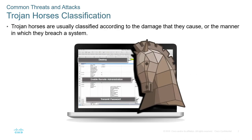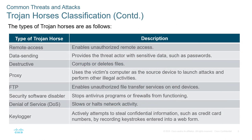Trojan horses can be extremely persistent and extremely painful. Normally they are classified according to the damage they cause or how they gain access to the system. For example, we have a remote access trojan, a proxy trojan, an FTP trojan, a keylogger trojan, a DDoS-type trojan, and a destructive trojan. What happens determines the category of the trojan horse. This is not a complete list — just some of the different types.